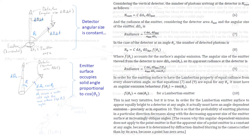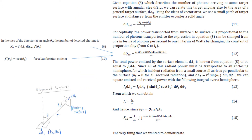Now that we have the expression for f(θ) — the angular-dependent emission of the Lambertian surface — we can put this into equation 8 and compute the radiant power dq1s emitted from the small surface element dA1 towards a distant surface dA2. We consider that amount of power as a fraction of total emission to get the view factor. Using equation 8, a distant receiving surface dA2 occupies a solid angle dA2 · cos(θ2) / r² as given in equation 11.